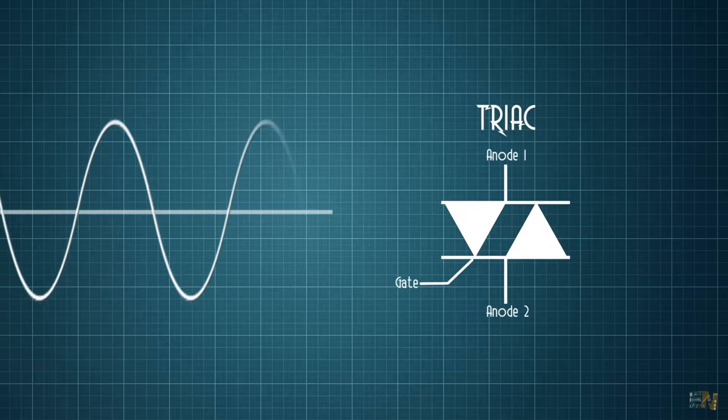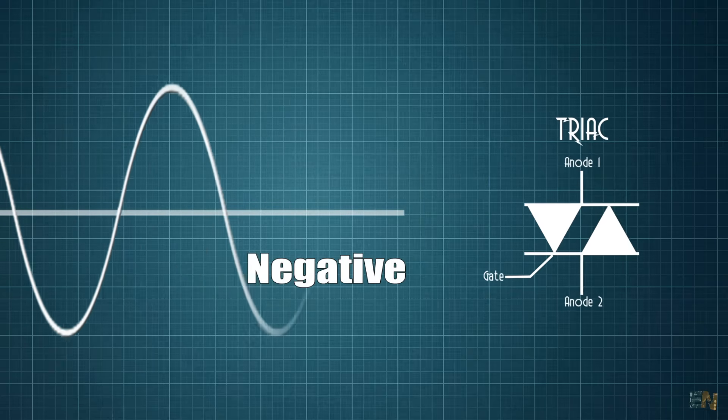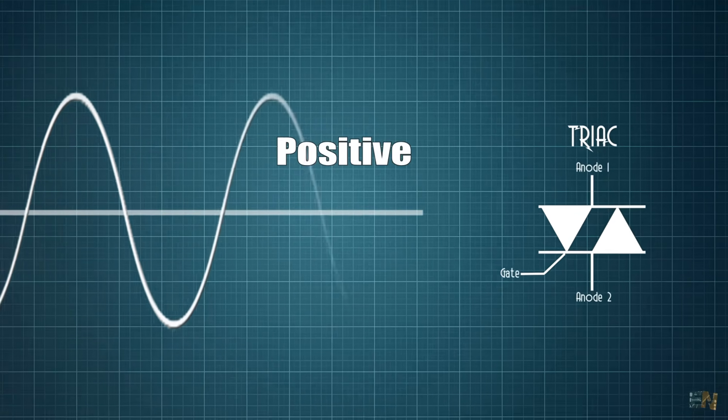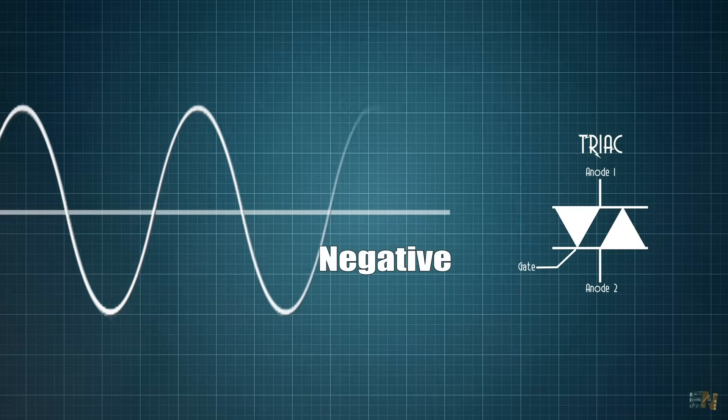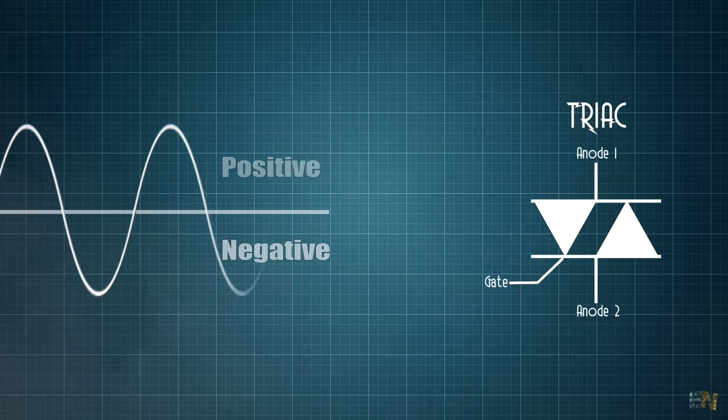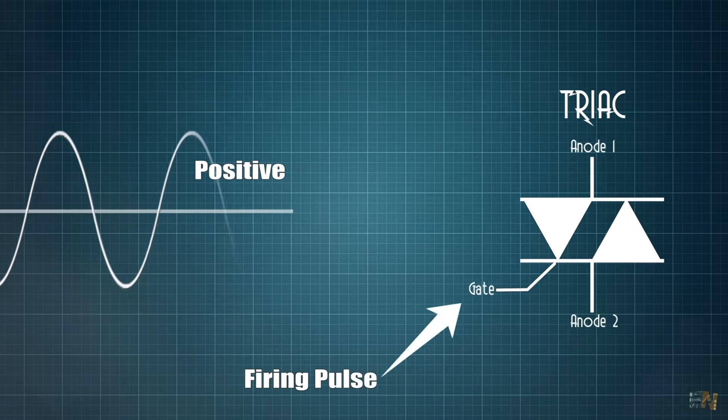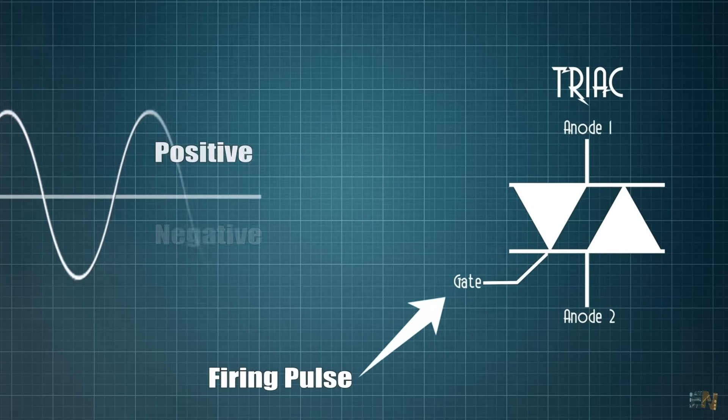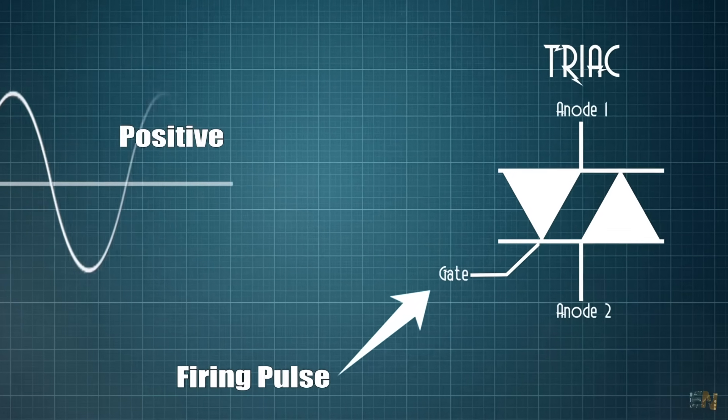When the voltage changes polarity, it will stop the current flow. To activate again the current flow, we need to apply a short pulse at the triac gate. Once again, it will only allow the current to flow till the voltage changes the polarity once again.